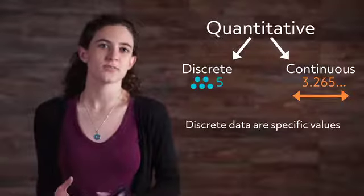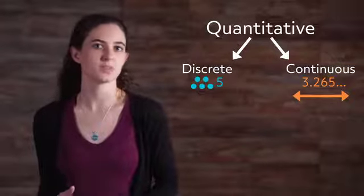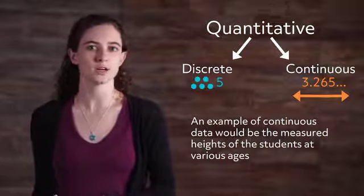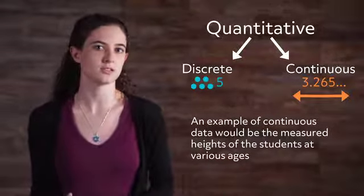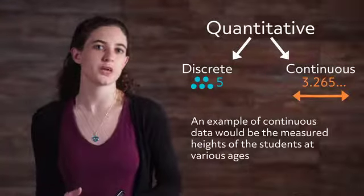Discrete data are specific values. For example, the data may represent counts of students at various ages. In contrast, an example of continuous data would be the measured heights of the students at various ages. Continuous data can take on any of the infinite number of values within a range of values.